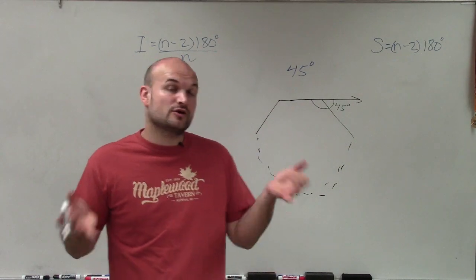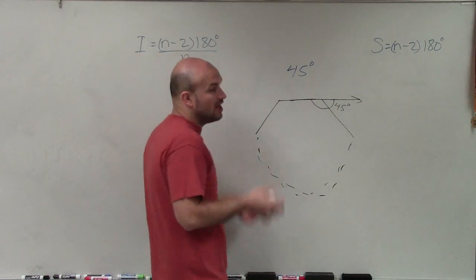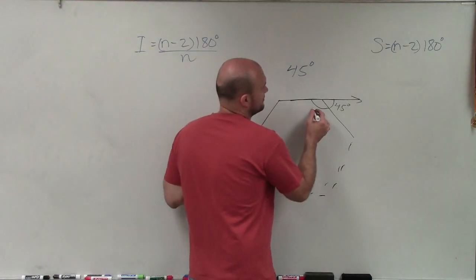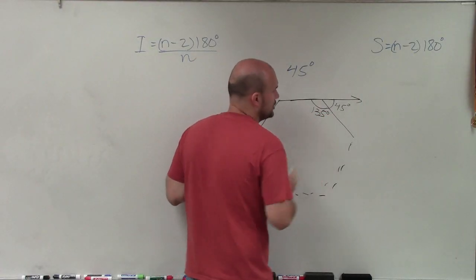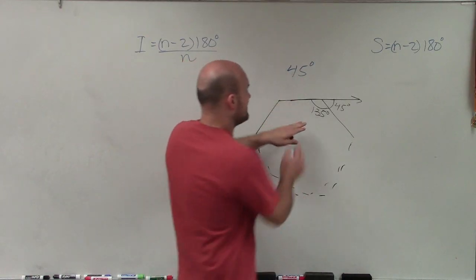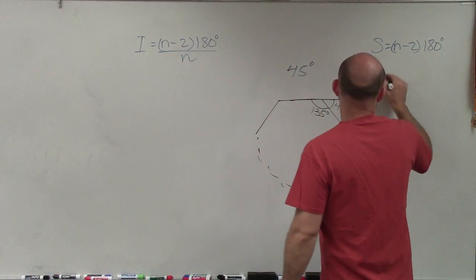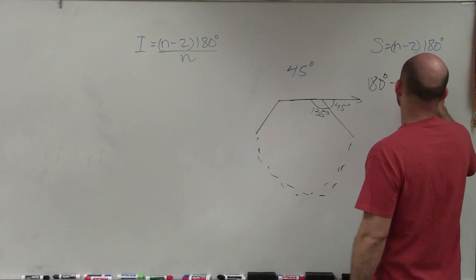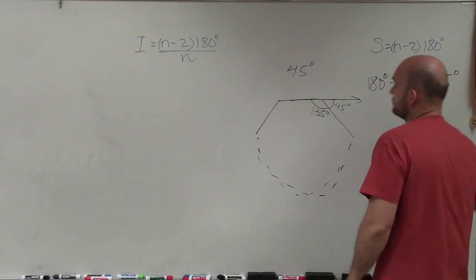Therefore, those two angles are supplementary, or they create a linear pair. Therefore, they're also going to add up to 180 degrees. So therefore, if I know that this is 45 degrees, to find the interior angle, all I simply need to do is 180 degrees minus 45 degrees equals 135 degrees.